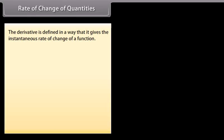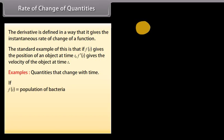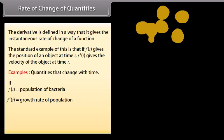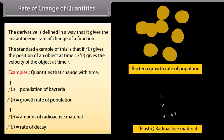Rate of change of quantities. The derivative is defined in a way that it gives the instantaneous rate of change of a function. The standard example is that f of t gives the position of an object at time t, and f dash of t gives the velocity of the object at time t. For example, if f of t equals the population of bacteria, then f dash of t equals the growth rate of population. If f of t equals the amount of radioactive material, then f dash of t equals the rate of decay.